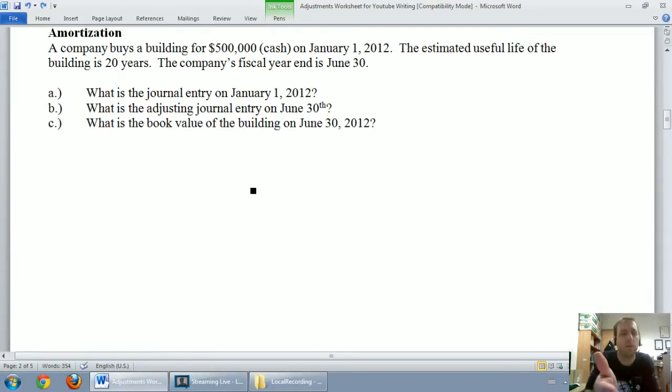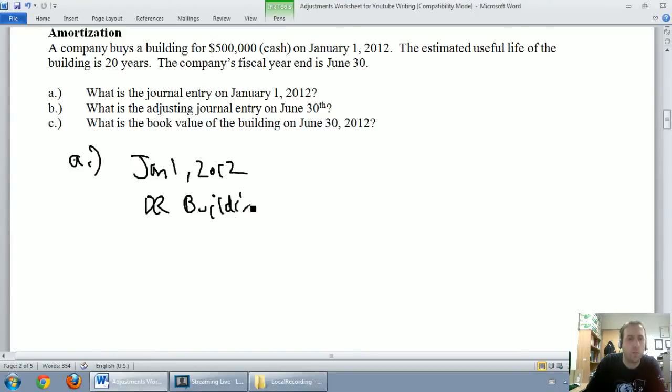So we've got a $500,000 building. We think it's going to be useful for 20 years. Actually, I'll come back to this in Part B of the question. Part A is really simple. It's a basic transaction. Part A, we bought a building for cash on January 1st, 2012. That's a lot of cash. Often there will be a mortgage payable or something. Anyway, January 1st, 2012, we bought a building for cash. Building's an asset. It's going up. We have more assets today than we had yesterday. Debit building.